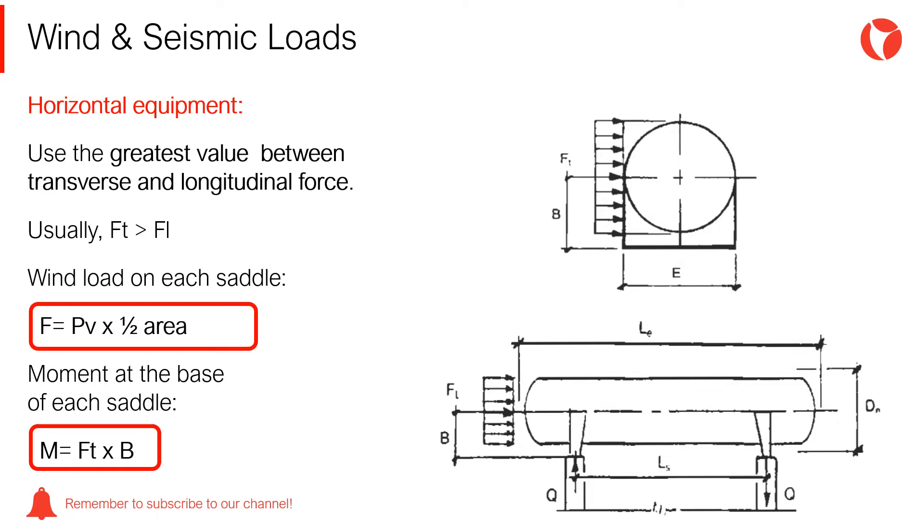The greatest value of each acting wind load needs to be determined for horizontal vessels. In this case, a transverse force and a longitudinal force could be acting on the vessel depending on the wind direction. Usually, since horizontal vessels are longer than wide, the transverse induced force is greater.